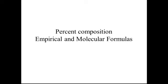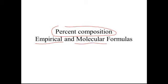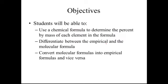In today's video we're going to be talking about something called percent composition, and we're also going to learn about two different types of formulas called empirical formulas and molecular formulas. Our objectives are: first, we're going to use a chemical formula to determine the percent by mass of each element in that formula. Then we're going to talk about the difference between the empirical and the molecular formulas, and convert between the two.